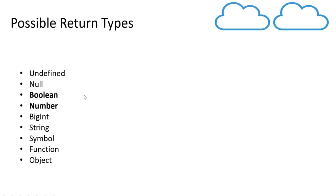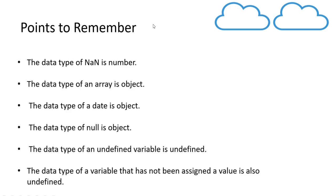These are the possible return types when we use the typeof operator in JavaScript: undefined, null, boolean, number, bigint, string, symbol, function, and object. These are all the data types in JavaScript. There are also certain points to remember — exceptions when using the typeof operator.